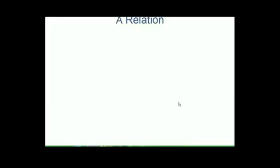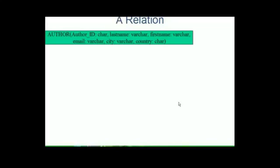We shall refer to the entity Author we have seen in our previous lessons. Author is the name of the relation here. Author ID is an attribute which can hold data of type char. Likewise, last name, first name, email, and city have type of varchar.